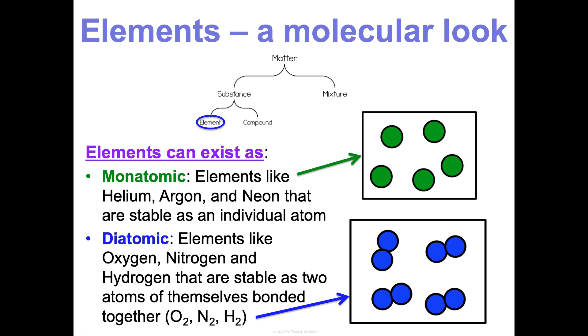But elements will bond to be stable. Being stable is a priority for them. But even still, if they're just bonding with themselves, we just would call it a diatomic element. So it's still in that category of element.